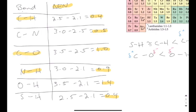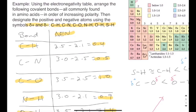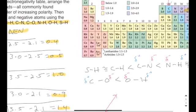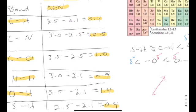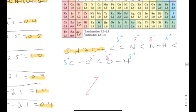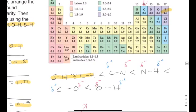Next, label δ⁺ and δ⁻ for the polar bonds, since those bonds have two poles. Recall the cutoff: ΔEN ≤ 0.4 is non-polar, so S–H and C–H get no labels. For C–N (ΔEN = 0.5), it is polar: C (2.5) is less electronegative than N (3.0), so C is δ⁺ and N is δ⁻. Repeat this process for all remaining polar bonds all the way through O–H.